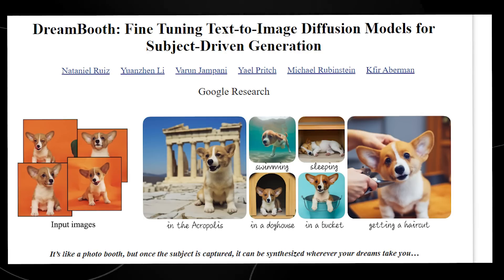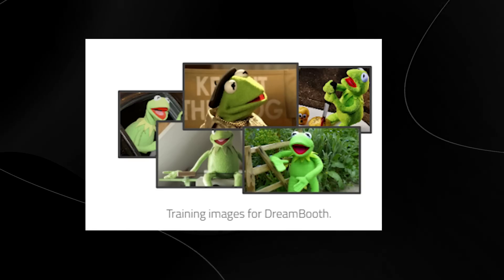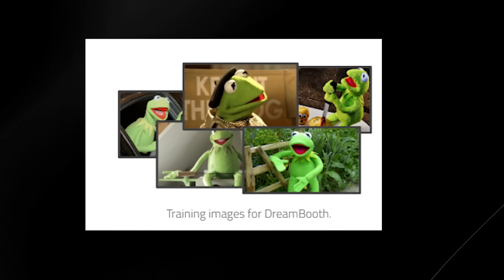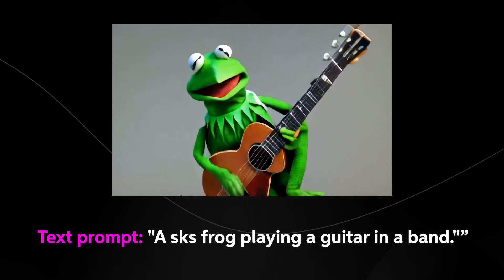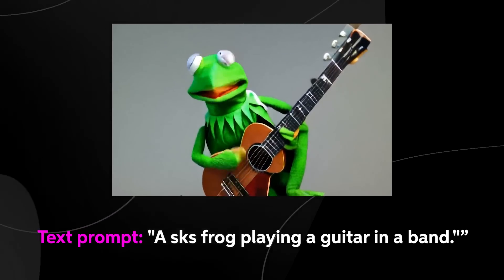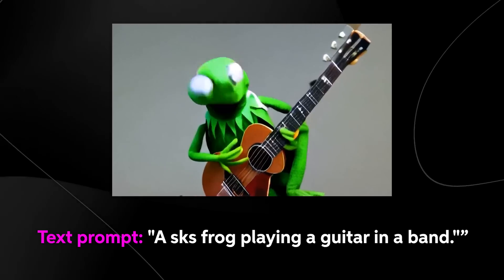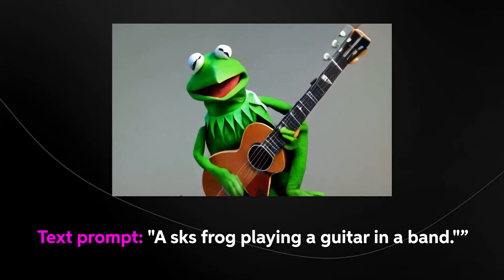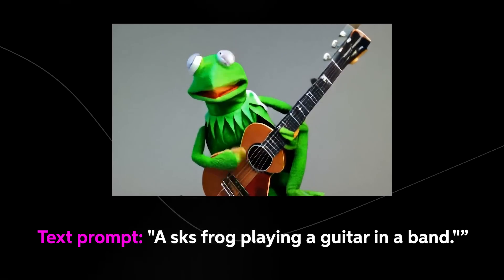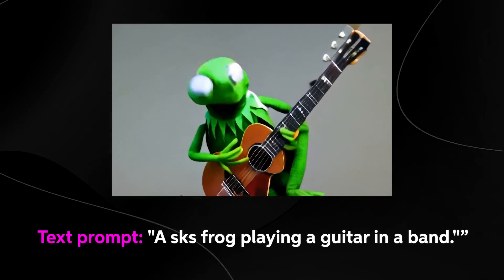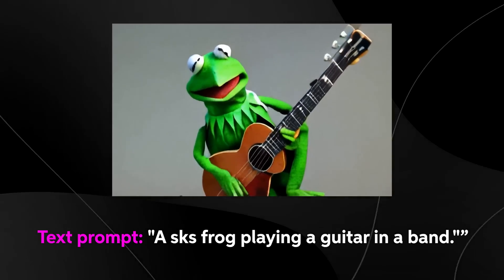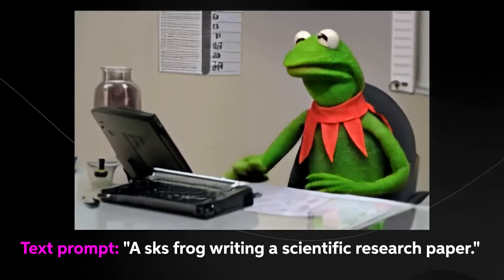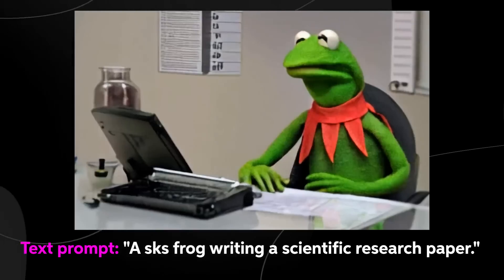The reason I talked about DreamBooth is because they tried to do this with the AI video creator. You can see the training images used were that of Kermit the Frog, and the text prompt was 'SKS frog playing a guitar in a band' — where SKS just means that specific object, in this case Kermit the Frog. Although it doesn't look super realistic, the image-generated output looks far more realistic than some of the moving ones seen initially. When you provide the driving image, your results are far more superior — like here, Kermit the Frog writing a scientific research paper, which looks more realistic.